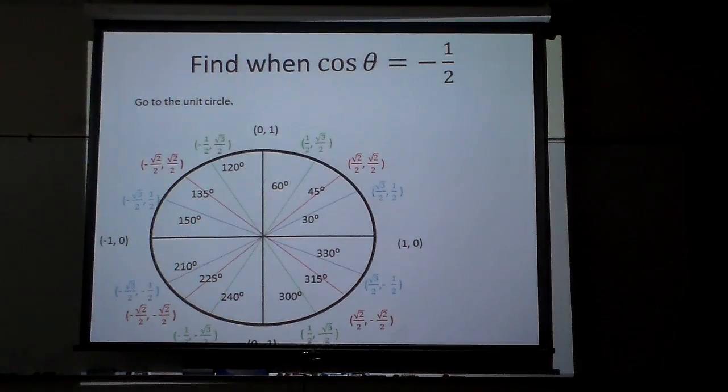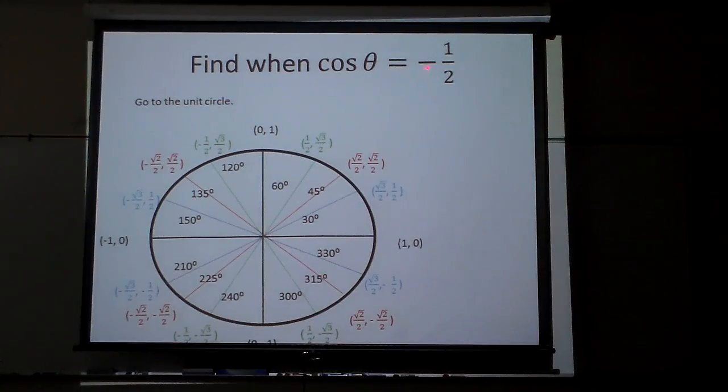How do we find it for cosine theta being negative one-half? Well, let's look at our unit circle. Here we have it right here, and I need to look and see where cosine is what? Negative one-half.